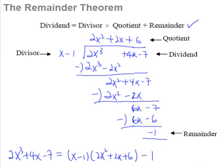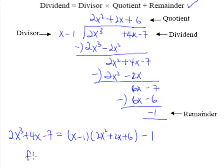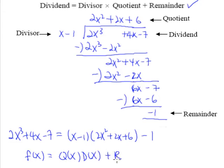In short, this is what we always do in shorthand: the dividend is usually f(x), it's always a function of x, equal to the quotient — which is again a function of x — multiplied by its divisor, plus the remainder. Now why is this important? So we've figured out a relationship between the function, the divisor, the quotient, and the remainder. But just what exactly is the remainder theorem?